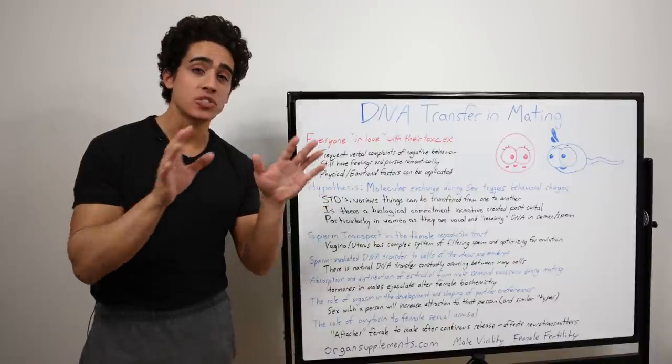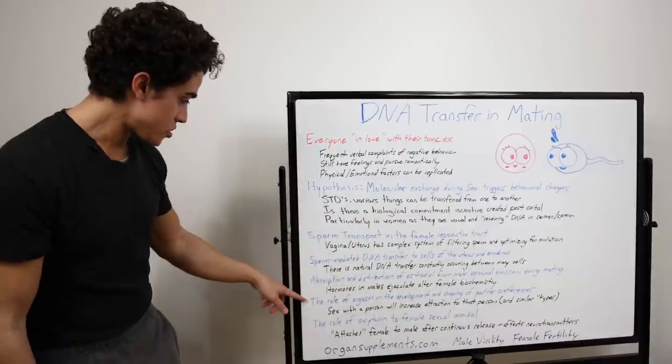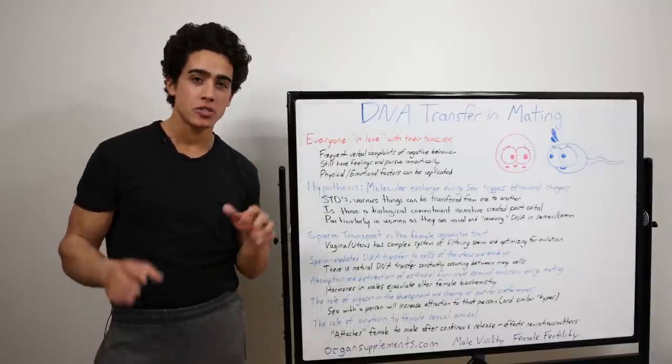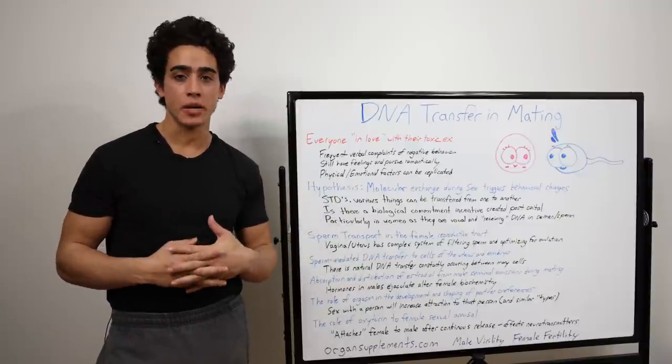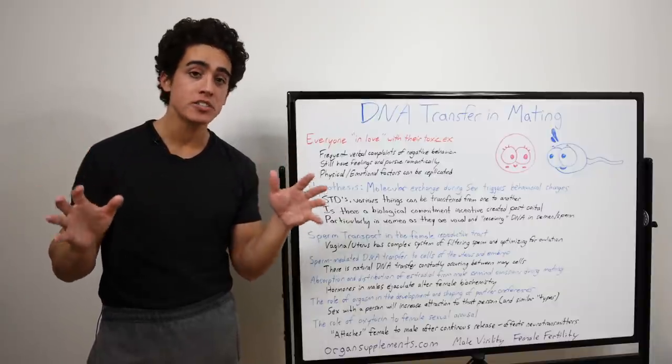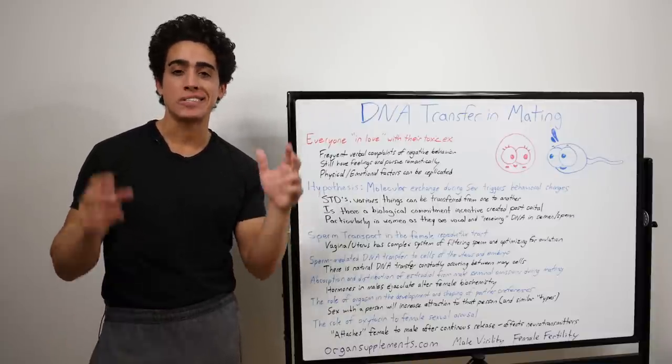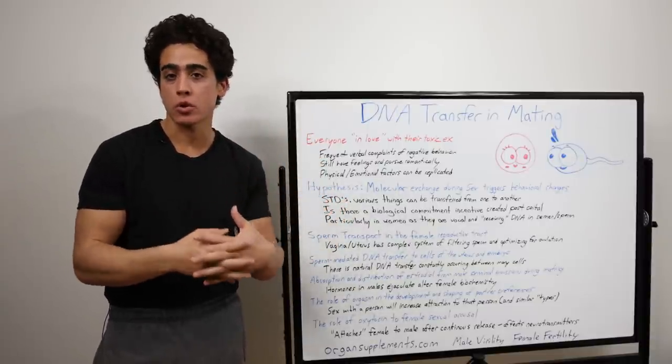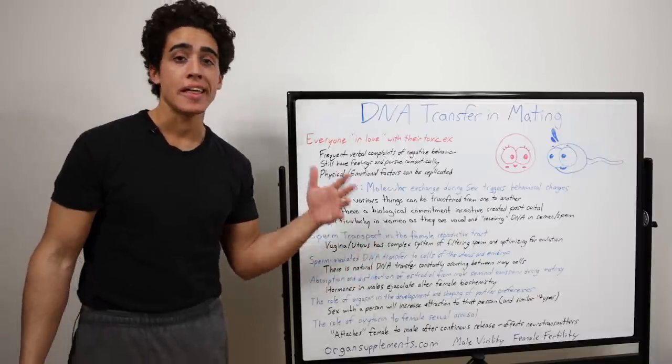So it's not a stretch to say that is also altering the behavior of a woman. Next up is the role of orgasm in the development and shaping of partner preferences. So there are various neurotransmitters released during orgasm modulating sexual behavior and reward. This affects the person's attraction and bonding towards their partner. The activation of these opioid systems in the body plays a role in dictating what the person's type is. Basically, if you mate with a specific type of person over and over again, you'll be more and more attracted to those features and more specifically, that person.